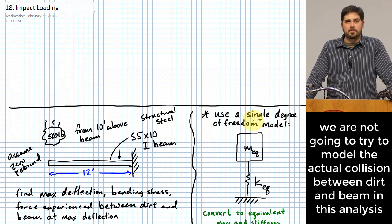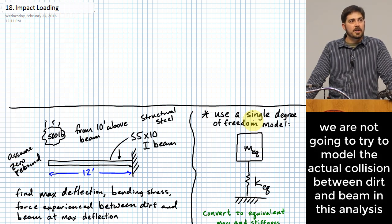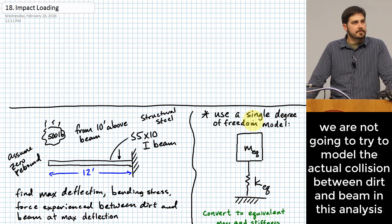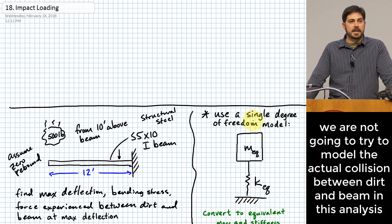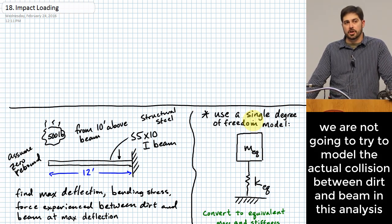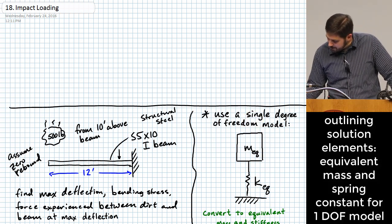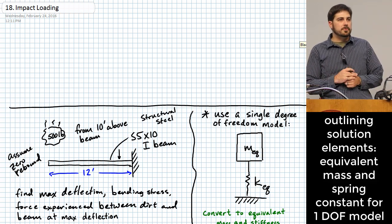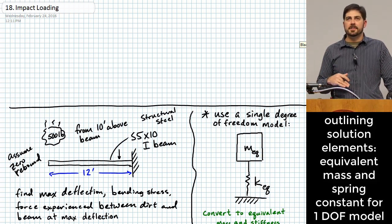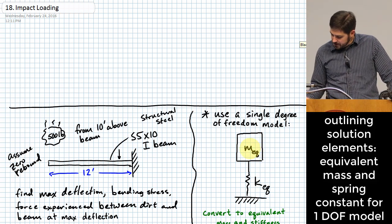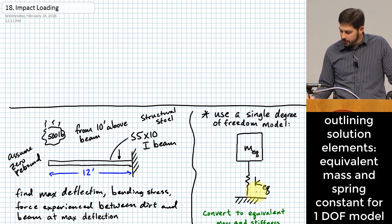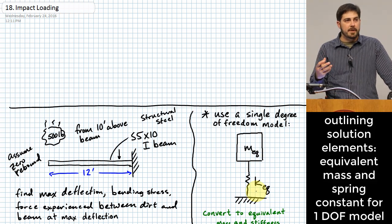Trying to figure out how much force acts between the dirt and the beam right at the moment of impact is also a complicated problem — more complicated than I can deal with using these techniques. It's going to depend a lot on the specifics of the material, particularly the dirt. We are going to have to deal with the potential loss of energy that happens whenever that collision occurs. Up here I want to outline what we plan to do. Over to the right you see a single degree of freedom model that we are going to use to describe how this system behaves.